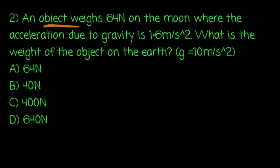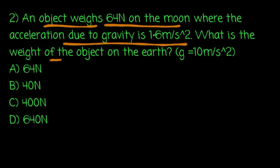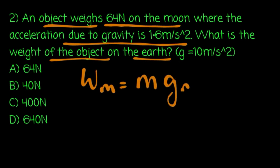An object weighs 64 Newton on the moon, where the acceleration due to gravity is 1.6 m per second squared. What is the weight of the object on the earth? Gravity on the moon is 1.6 m per second squared, on Jupiter is 25.9 m per second squared.